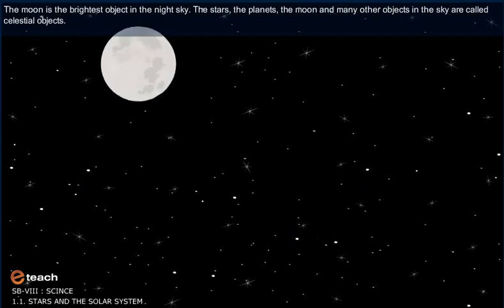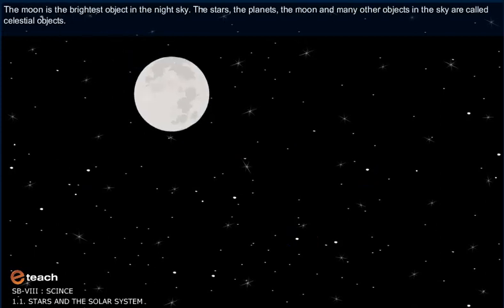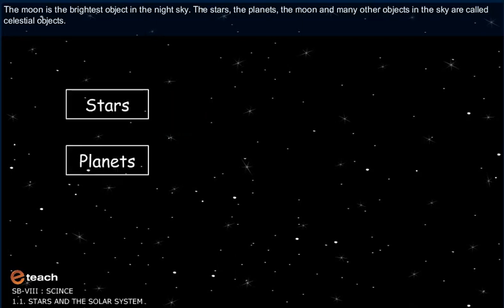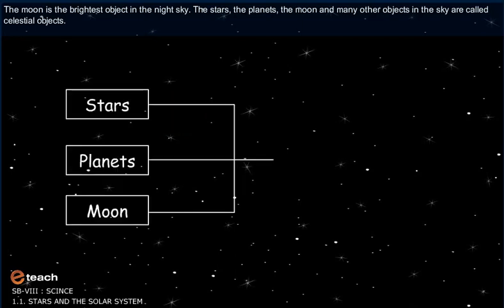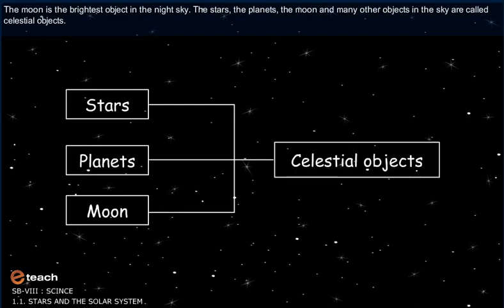The moon is the brightest object in the night sky. The stars, the planets, the moon and many other objects in the sky are called celestial objects.